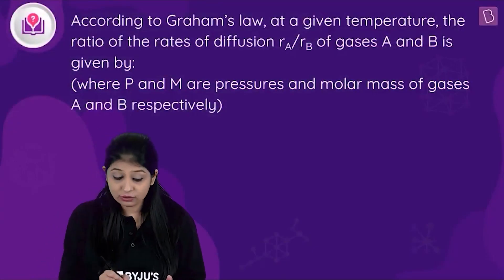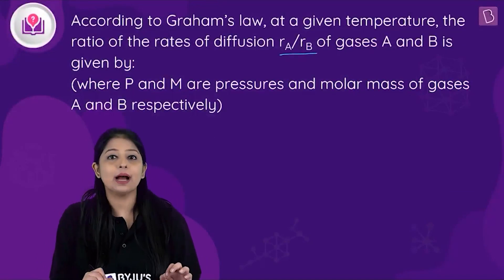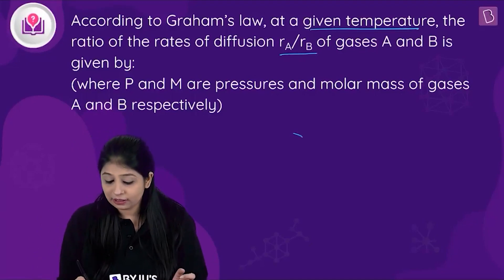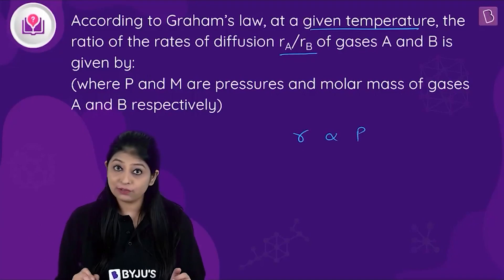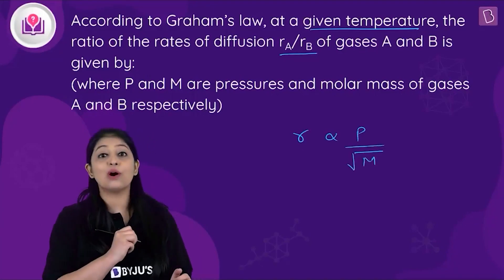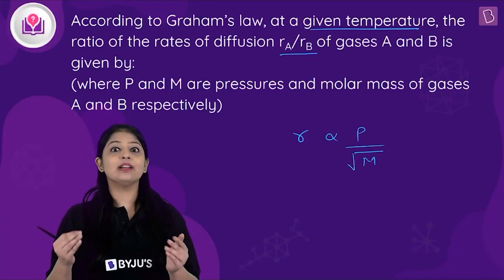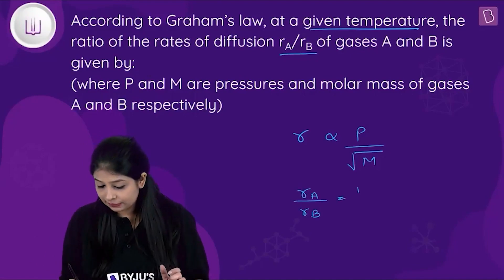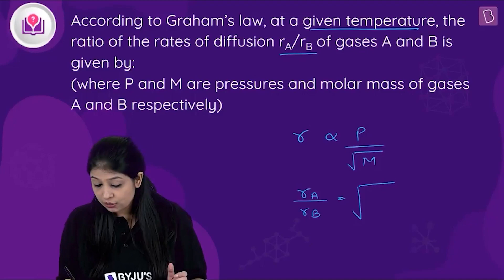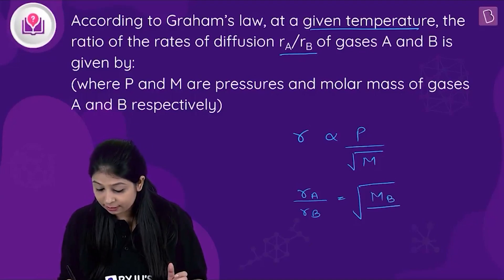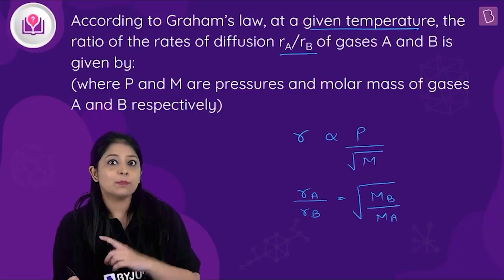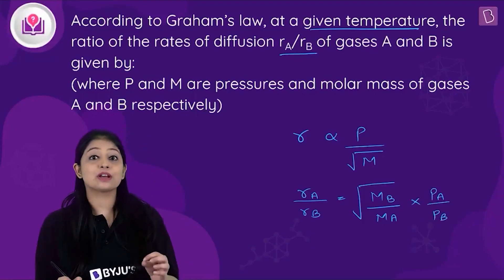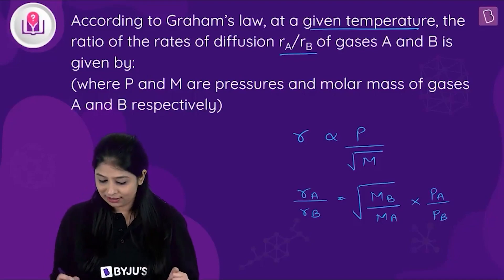Let's look at this question. We are asked to find the ratio of rates of diffusion, rₐ/r_b, for gases A and B at a given temperature. According to Graham's law, the rate of diffusion of a gas is directly proportional to the pressure of the gas and inversely proportional to the square root of the molar mass of the gas. So rₐ/r_b equals the square root of (M_b/M_a) multiplied by (Pₐ/P_b).